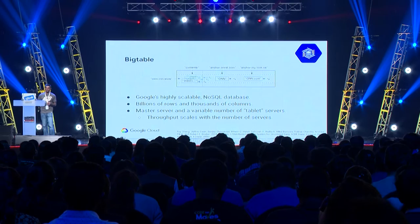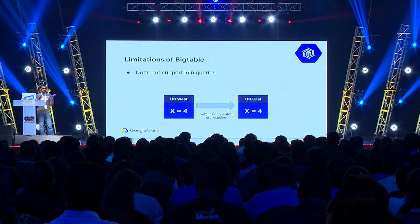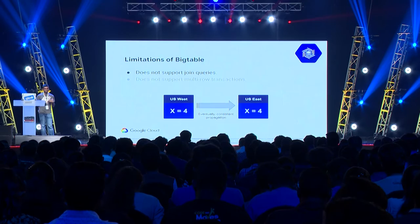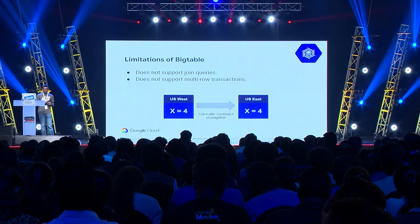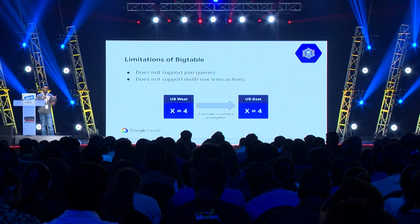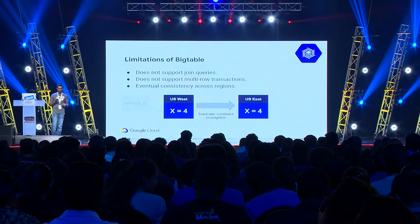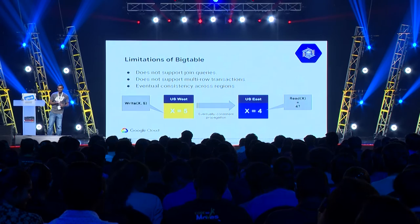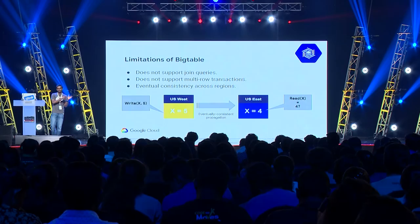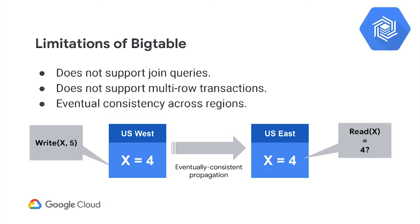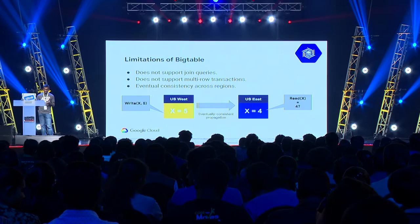However, there are limitations in this design. Bigtable doesn't support join queries, doesn't support multi-row transactions — you can only update one row in a given operation — and perhaps the biggest problem is it only supports eventual consistency when operating across regions. If you update data in one region, a user in another region can still read the old value for some time. These limitations can make life really miserable when implementing complex distributed applications, so Google built another database called Spanner.